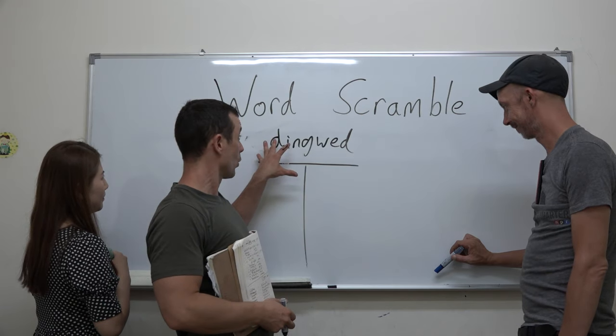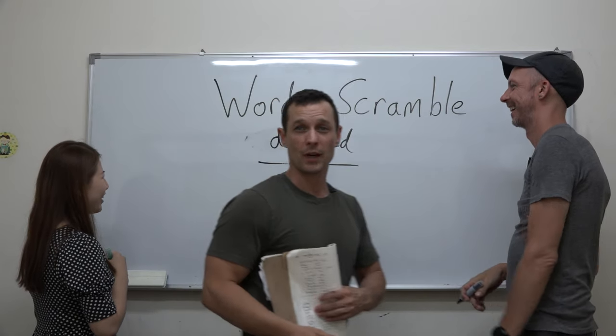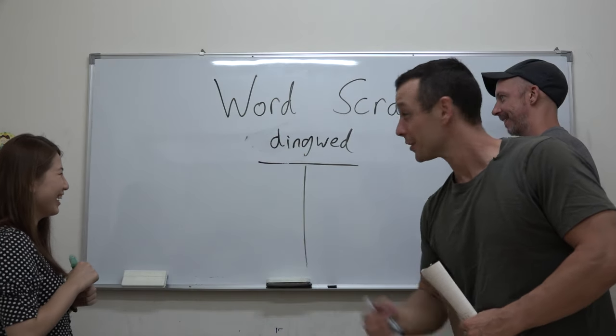So this is how it would work. I take a word, I scramble the letters, and with these two students what I'm going to do is I'm going to describe what it is and then they're going to have to try and spell it.